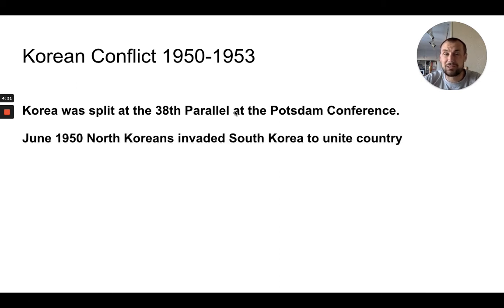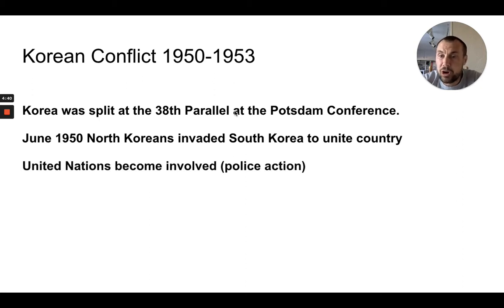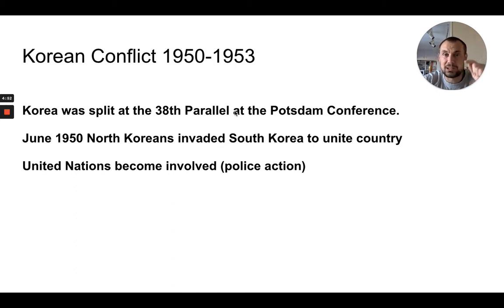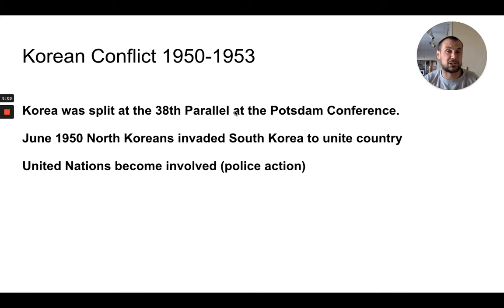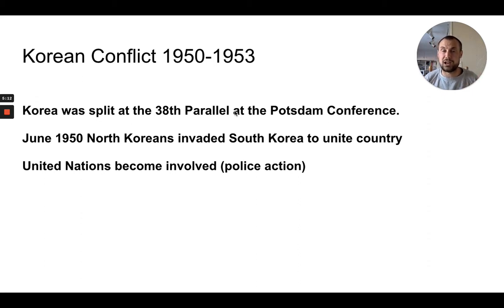North Korea, as a surprise to basically the entire world, invaded wanting to unite the Koreas together. Truman went to the United Nations Security Council saying we need to stop this spread of communism and send in troops. The Soviet Union, who had veto power, was boycotting the Security Council and wasn't there. We didn't recognize Mao Zedong's communist government in China, so they were fine with it. The United Nations went in — this would be called a police action.